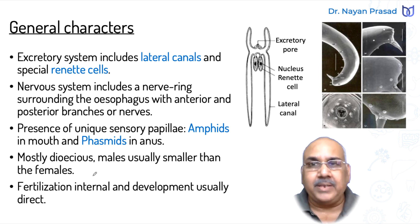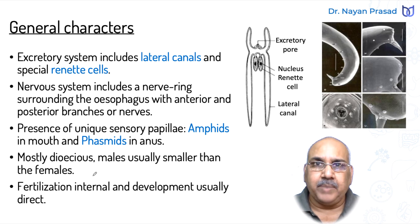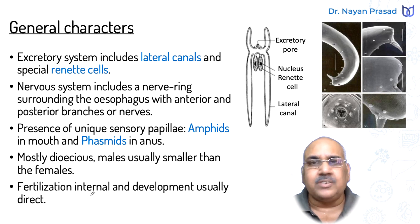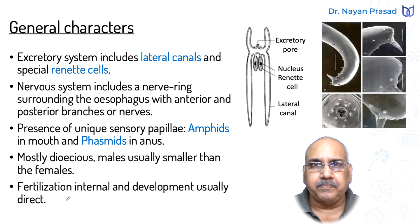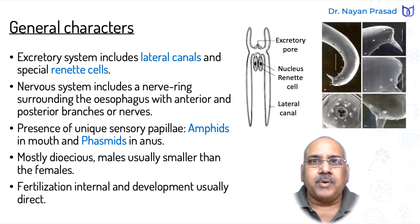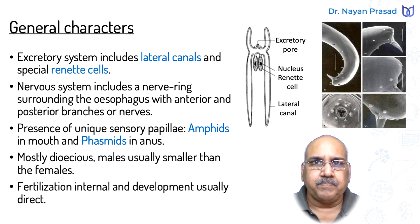In many cases, sexual dimorphism is distinct — males and females can be distinguished from the outside. Fertilization is internal, taking place inside the body; however, development is usually direct, meaning no larval stage. This is all about the introduction and general characters of Phylum Nemathelminths or Aschihelminthes. In our next video, we shall discuss the classification of Nemathelminths. That's all for today. See you in the next one. Thank you.